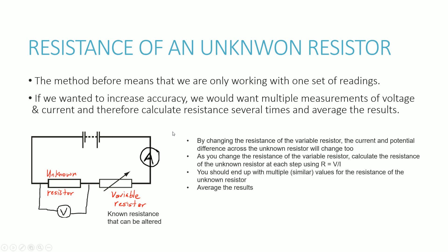But there might be a better way. If we wanted a more accurate set of results, we would ideally want multiple measurements and then average the results to give the most reliable true resistance of the unknown resistor. Instead, we add a variable resistor — a resistor with a known resistance that can be altered, for example from 1 ohm to 2 ohms to 3 ohms. The main idea is that we know its resistance and we can alter it.